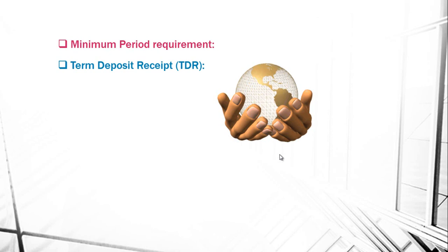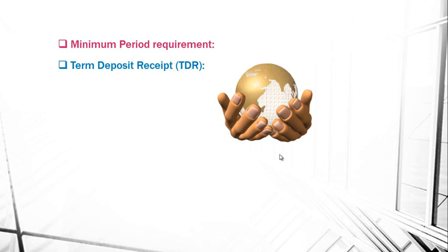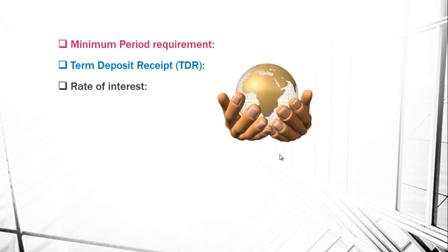The sixth feature is term deposit receipt, or TDR. The bank issues receipts called TDR at the time of opening the account, which contain the amount, date of deposit, and time period of the account. Next is rate of interest: the bank determines the rate of interest or loss on a half-yearly basis.